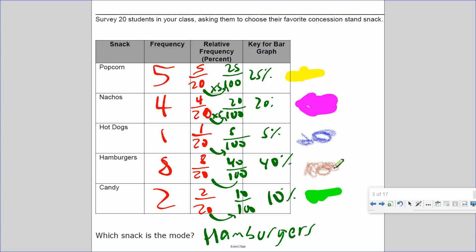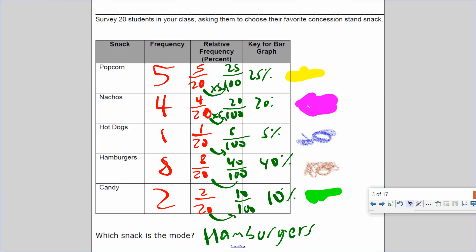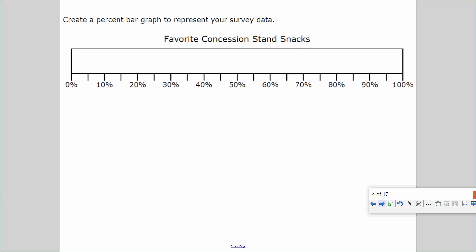So, 25% chose popcorn. So let's get the yellow highlighter. So this is called a percent bar graph. We're going to create a percent bar graph that represents the data, this survey data. So let's look at this. The scale is counting by 5: 0, 5, 10, 15, 20, 25, 30. So 25% represents popcorn.